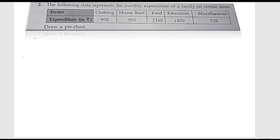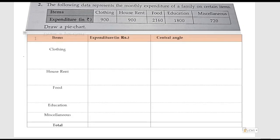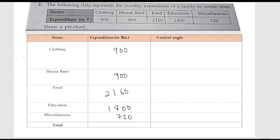For drawing a pie chart, first we need the angles. So for that we will draw a table. In this table the first column is for items, the second is for expenditure, and the third is for central angle. The expenditures are: clothing 900, house rent 900, food 2160, education 1800, and miscellaneous 720.